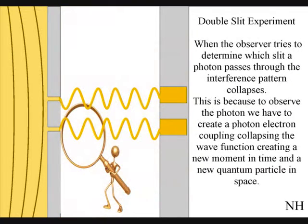When the observer turns on a detector to determine which slit a photon passes through, the interference pattern collapses. This is because to observe the photon, we have to create a photon-electron coupling, collapsing each wavefront into a new quantum particle that will have its own position in space and time.